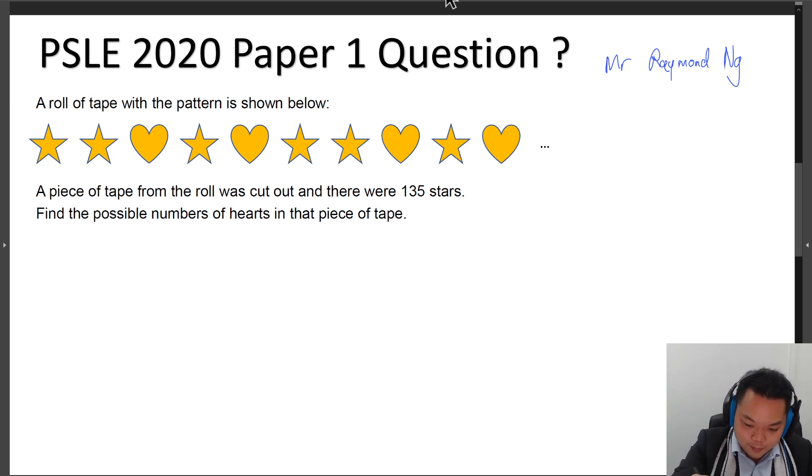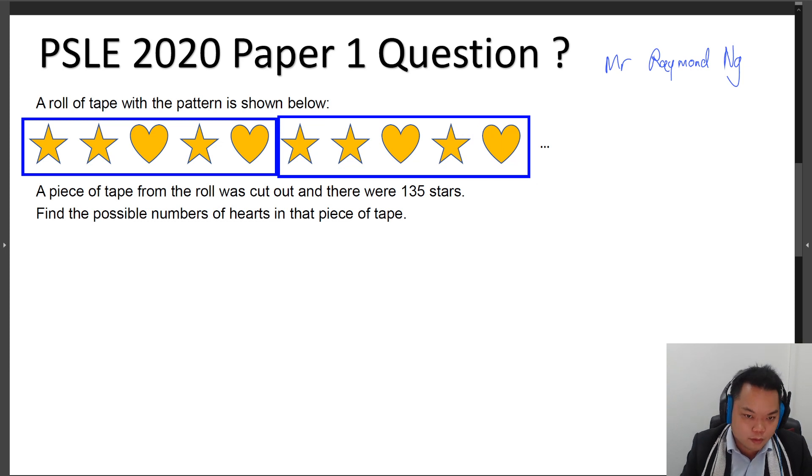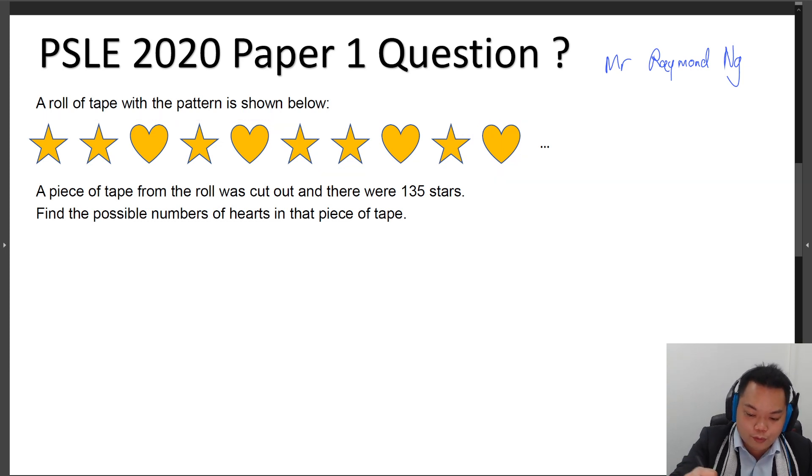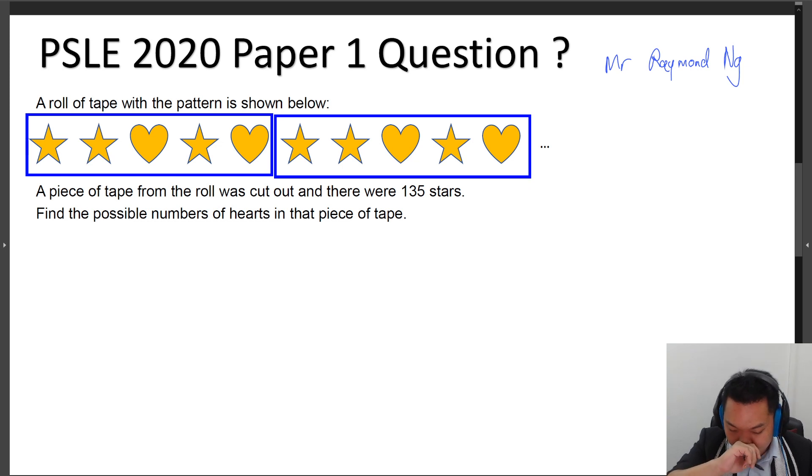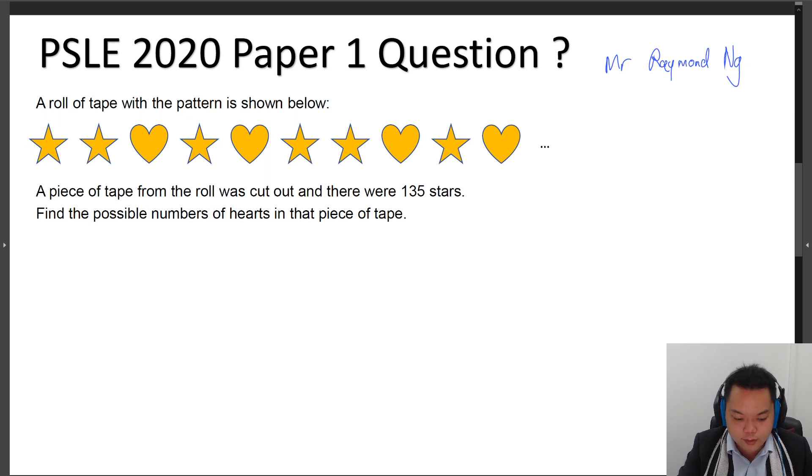So over here you will see that most of you would start out by grouping them in this manner, which is correct. So if we say that in one of these groups there are five items: three stars and two hearts. So one complete group has three stars and two hearts.